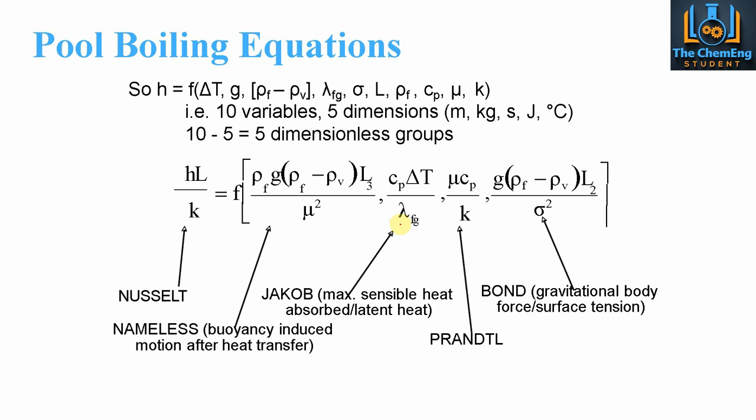Now we also have the Jacob number, and this looks at the maximum amount of sensible heat that is absorbed and also the latent heat. Because remember, sensible heat is the amount of heat needed to increase the temperature. Whereas latent heat is the amount of heat needed in order to change a phase. So the Jacob number accounts for this because we have the latent heat, lambda Fg, so that's the difference between the liquid and the vapor. We have the specific heat capacity and we have the difference in the temperature. We then have Prandtl number, so that's that one there again, that should be very familiar with us as chemical engineers. So that's the mu Cp over K. And then we have the bond dimensionless group, which takes again into the gravitational body forces, but it also accounts for the surface tension as well. So this allows us to see the effect that the difference in the densities and the length and the penetration of these bubbles through the surface of the liquid. So that's where the surface tension comes into play.